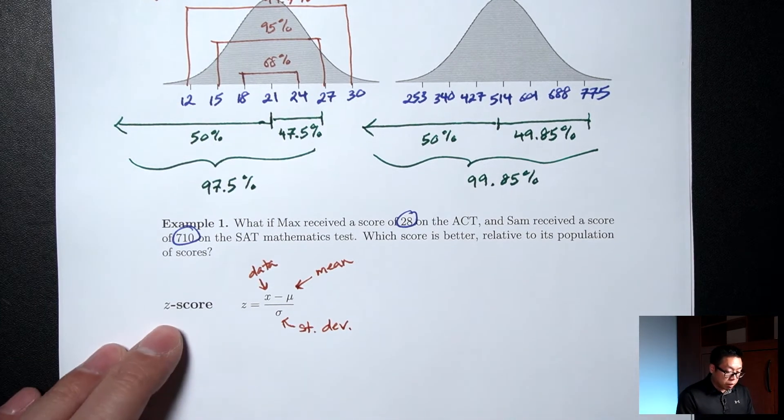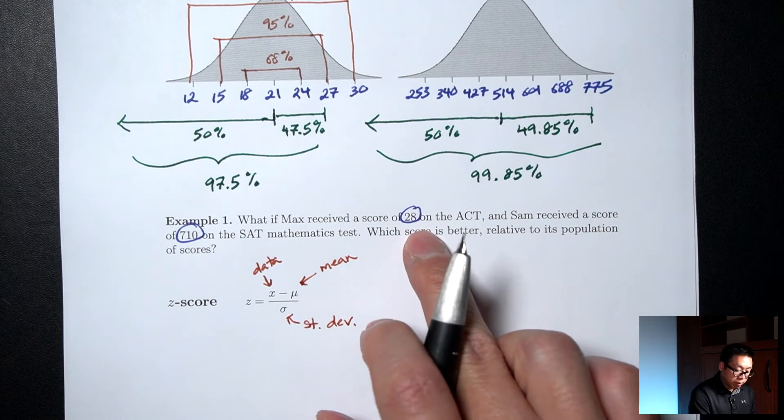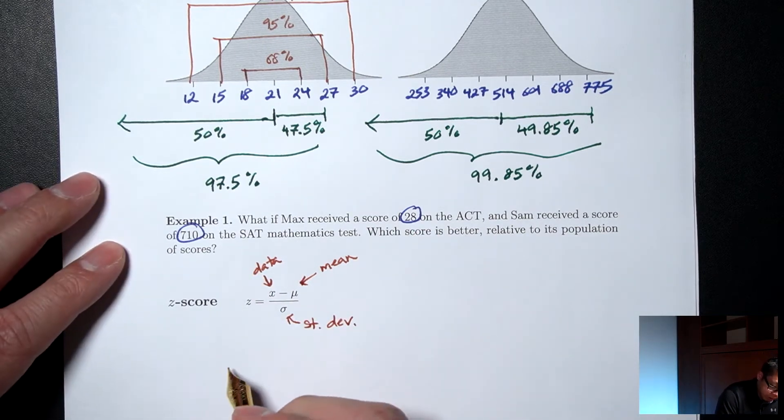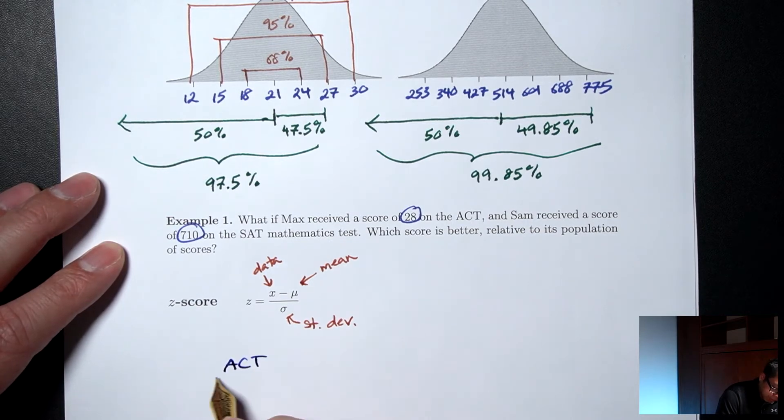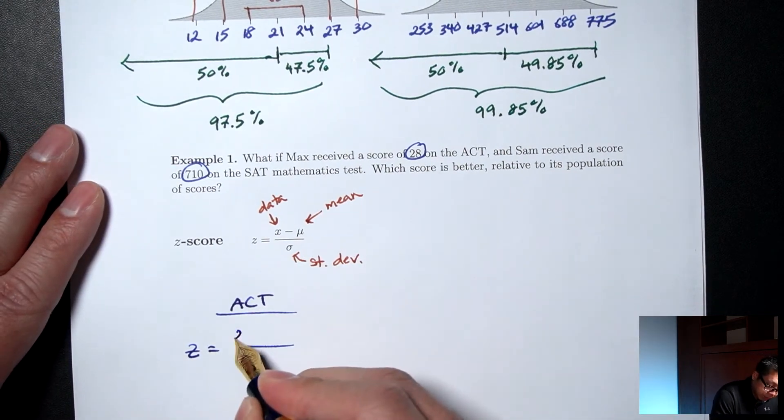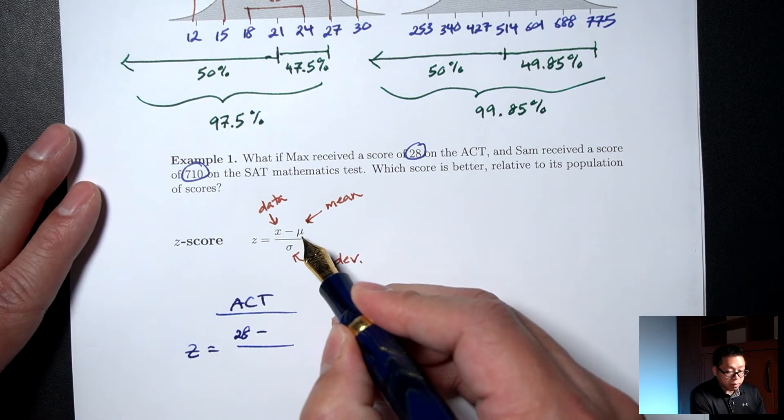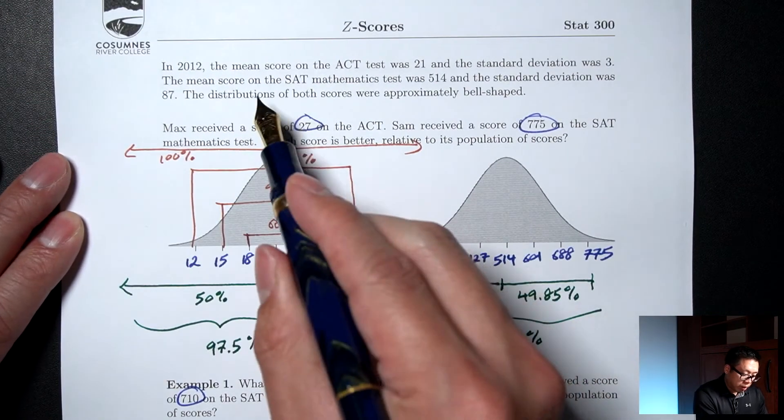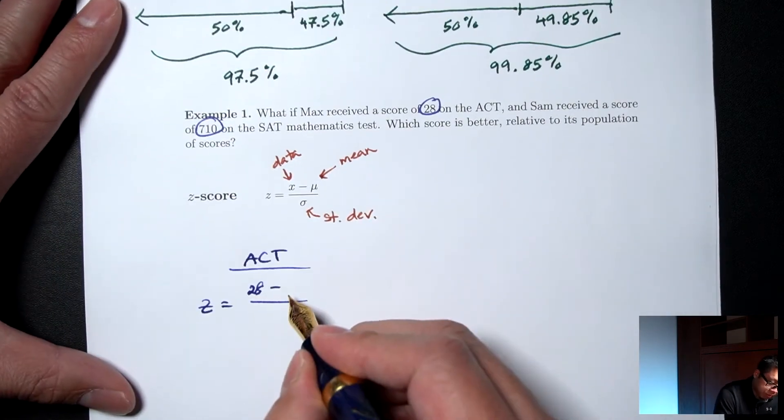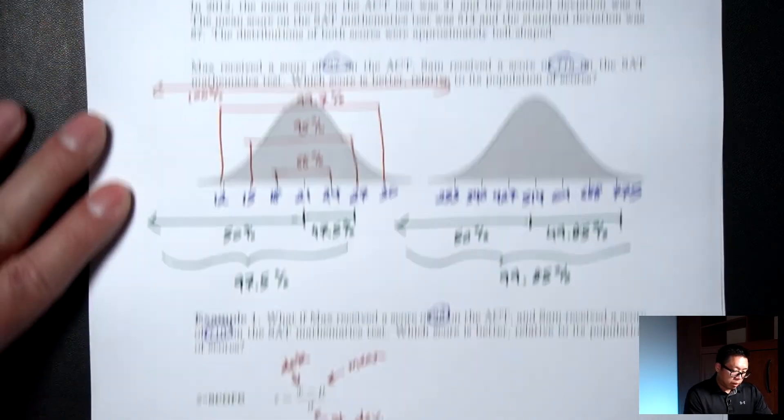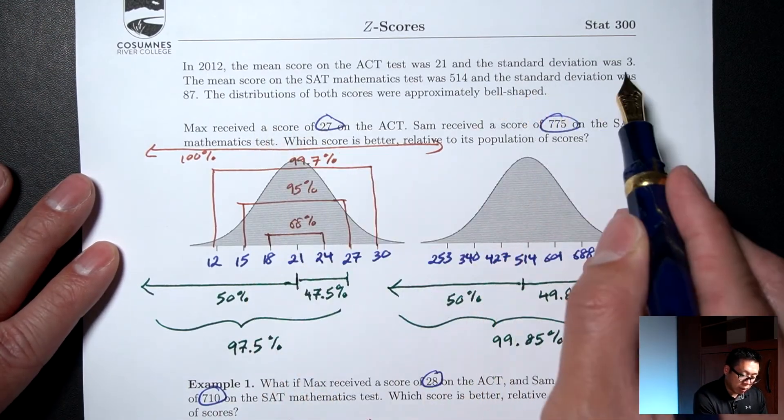So let me calculate the z-score for both situations, for the 28 and for the 710. For the ACT first. Our x is the score, so that's 28. Minus the mean for the ACT. What's the mean for the ACT? The mean for the ACT was 21. On the bottom, the standard deviation for the ACT.